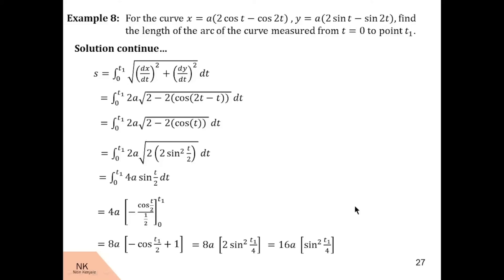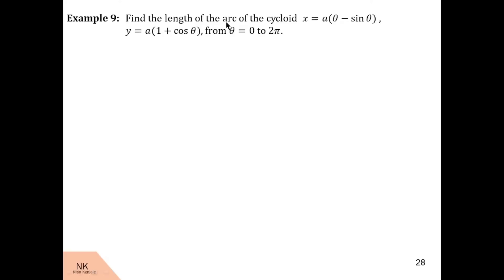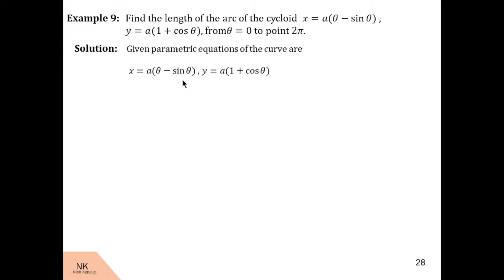Let me show one more example of similar type. Here we are asked to find the length of the arc of the cycloid given by the parametric equations x = a(θ − sin θ) and y = a(1 + cos θ) from θ = 0 to 2π. We differentiate with respect to θ: dx/dθ = a(1 − cos θ) and dy/dθ = a(−sin θ).